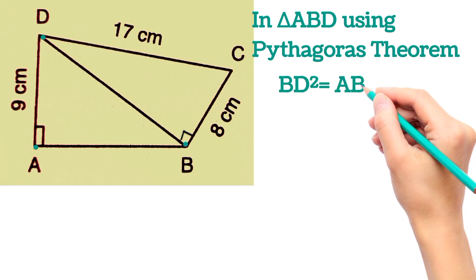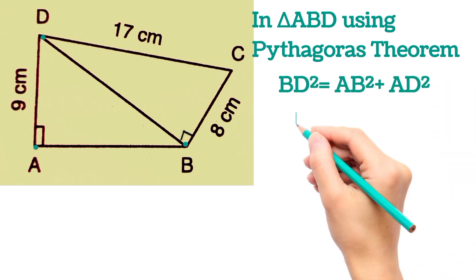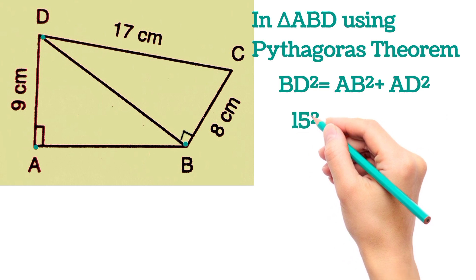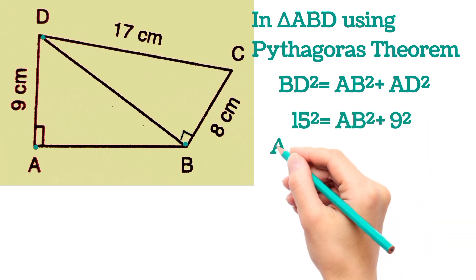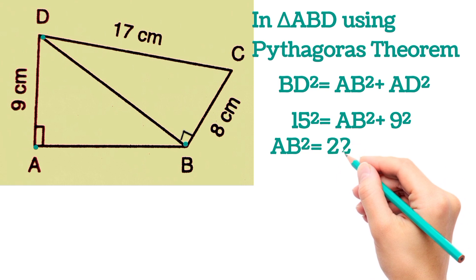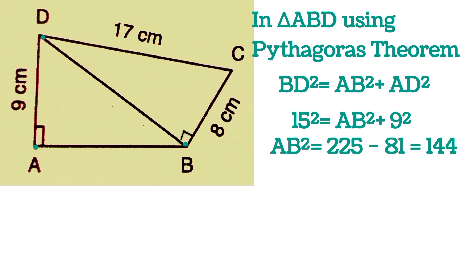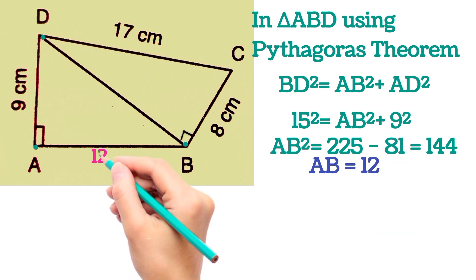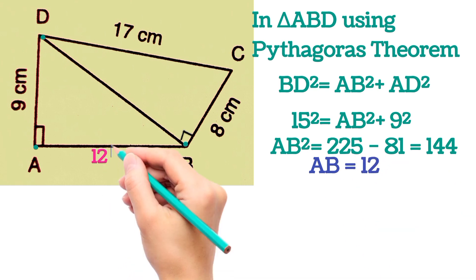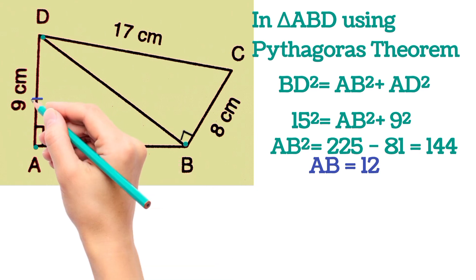In triangle ABD, BD² = AB² + AD². Substituting: 15² = AB² + 9², so AB² = 225 − 81 = 144, therefore AB = 12 cm.